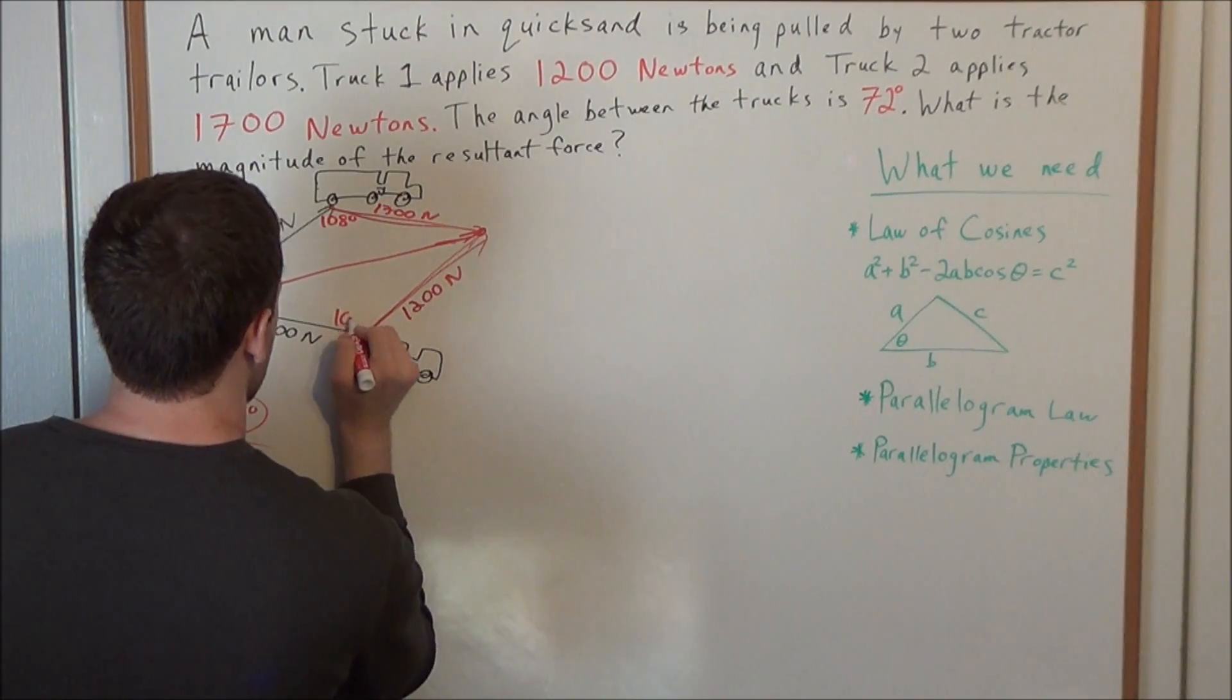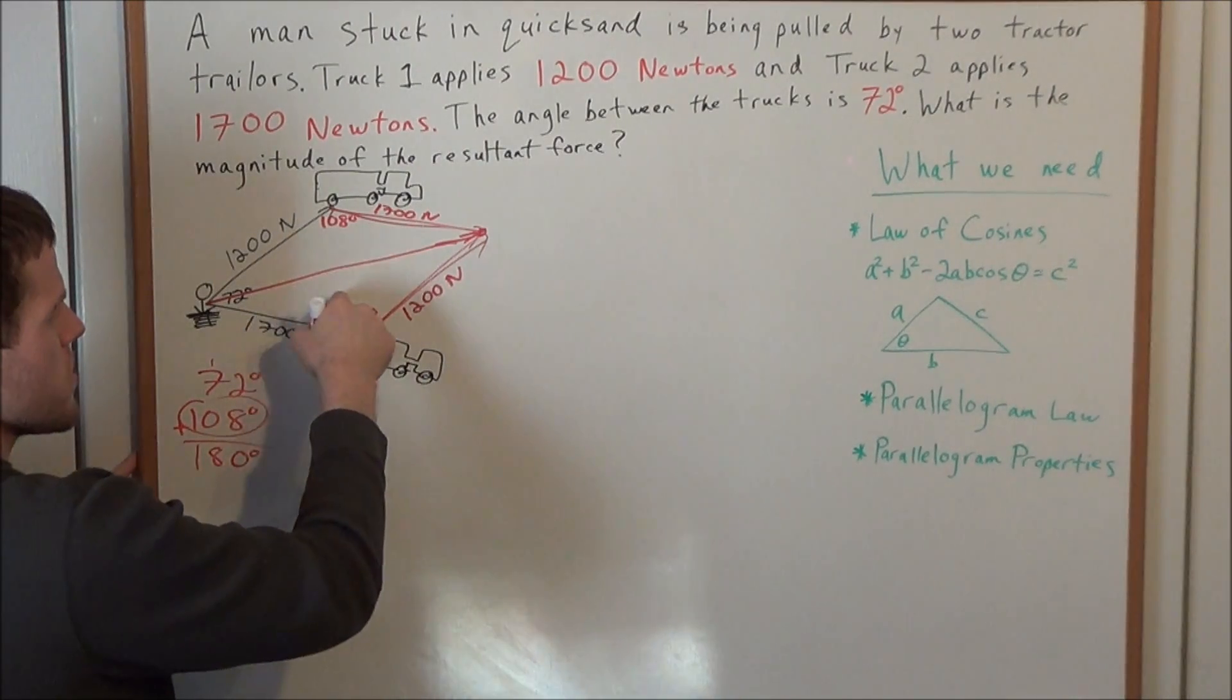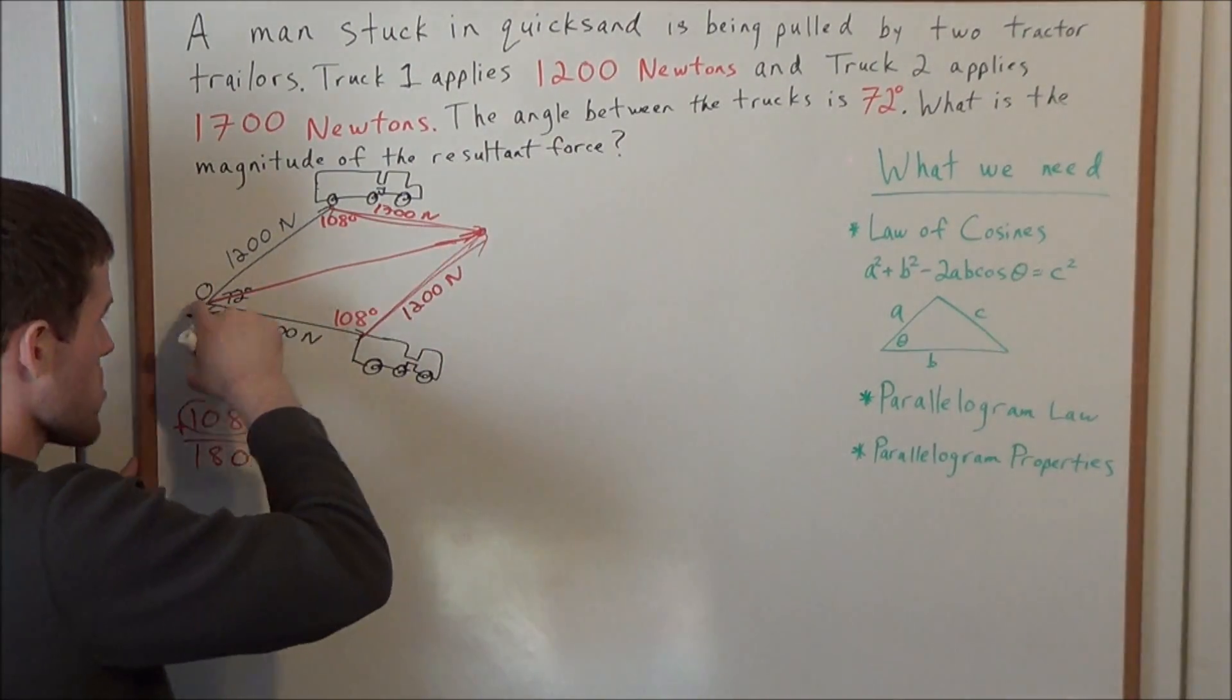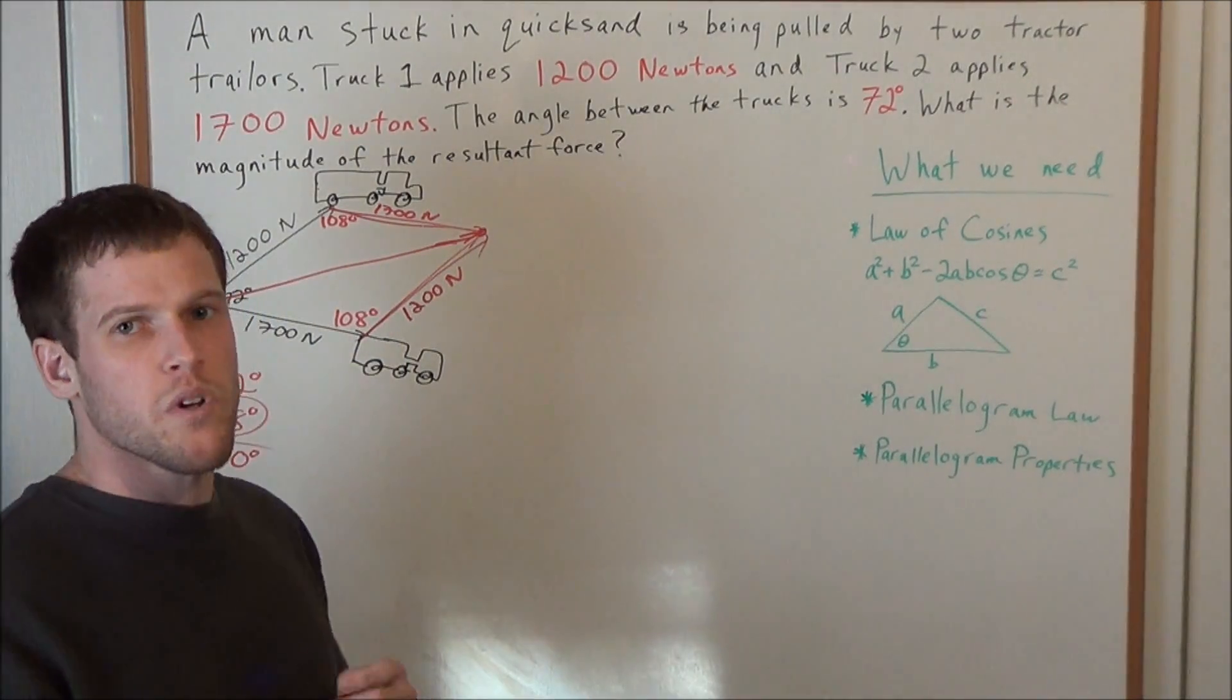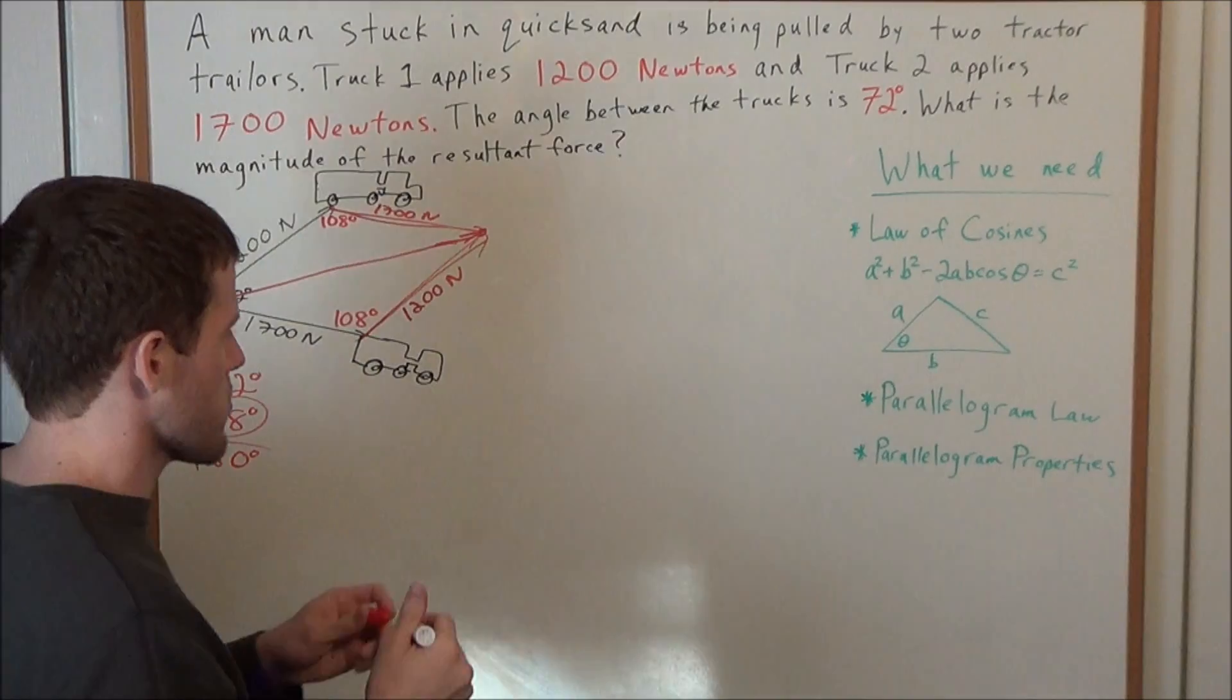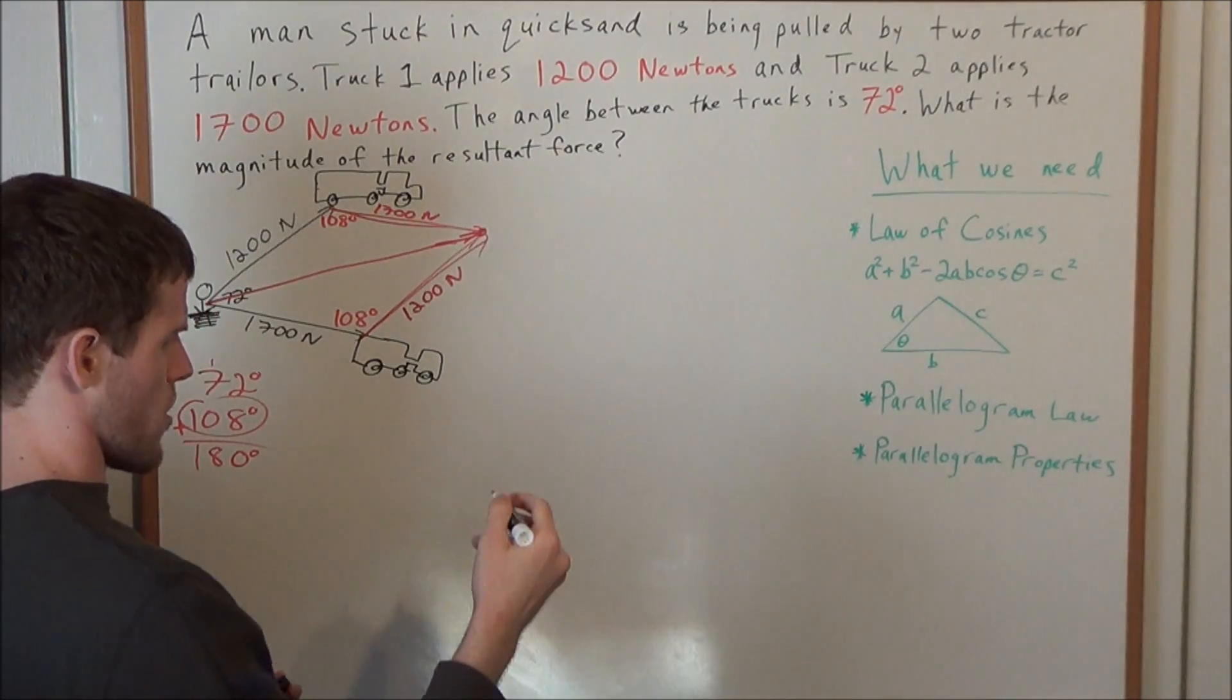The goal of finding 108 degrees is because we can't use this 72 degree angle, because this resultant force is going to be breaking this 72 degree angle into an indeterminate number of pieces. We could find it later in the problem, but for now we're interested in this 108 degree angle. So now let's go ahead and sketch this problem in terms of a simpler triangle.